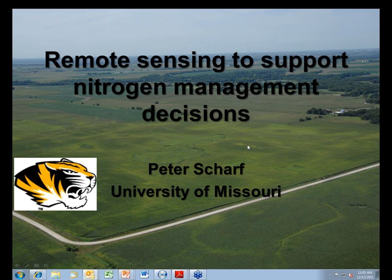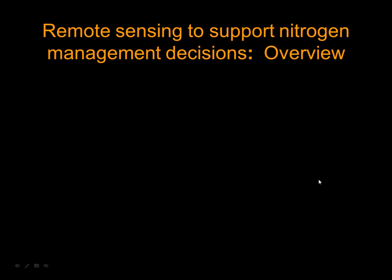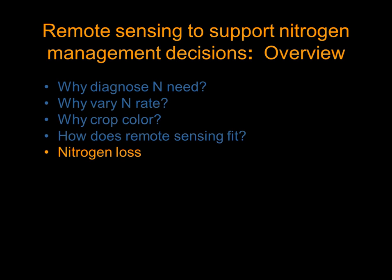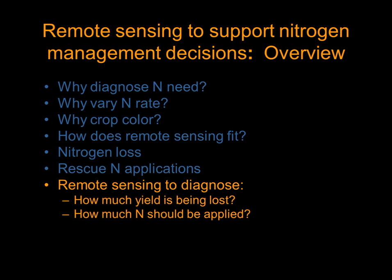There are some other things we'll touch on as well, but dealing with lost nitrogen is the number one thing I'm going to be covering. So an overview: first, the wide range of nitrogen needs and why diagnose nitrogen need — I'll show you a little of my work in that area. Why vary nitrogen rate going across the field? Why is crop color a good way to do that? And how does remote sensing fit? Then nitrogen loss, the situations where that happens, and rescue nitrogen applications — how they can be done and how effective they are. And then back to remote sensing to diagnose how much yield is being lost and how much nitrogen should be applied. With all of these, I'm going to be focusing on corn, though it would certainly apply to other crops as well.